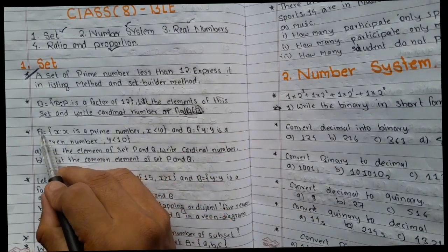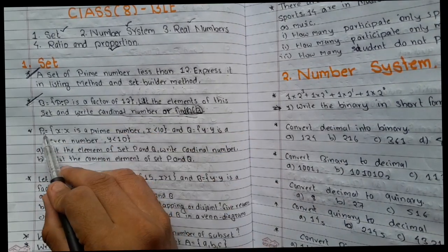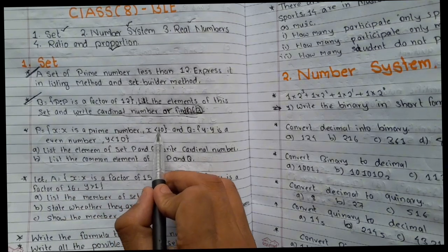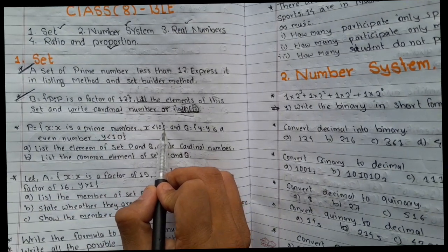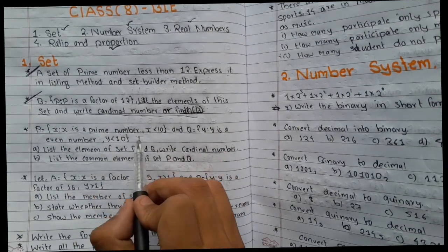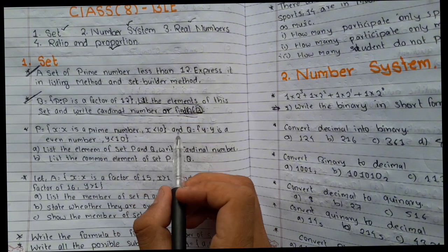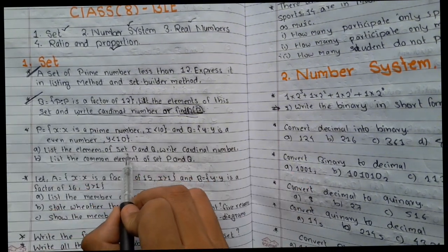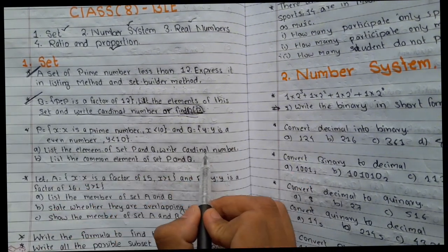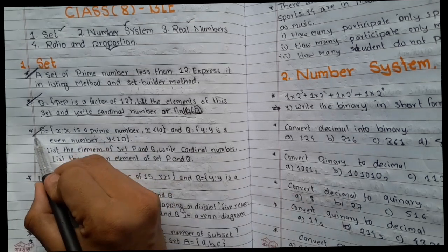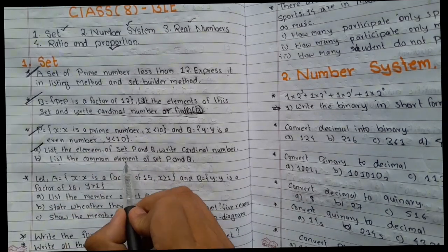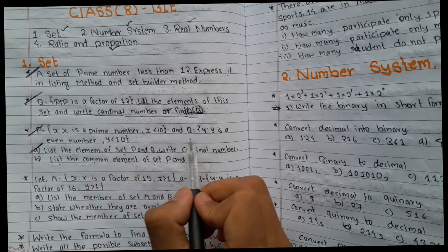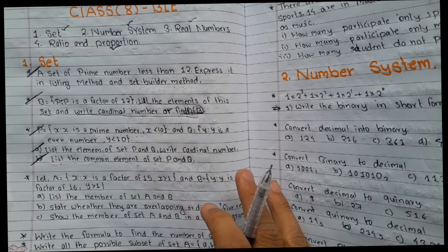This is a very important question. P is equal to x such that x is a prime number less than 10. And Q such that y is an even number less than 10. List the elements of P and Q and write the cardinal number. This is a fixed question. List the common elements of set P and Q — P intersection Q is a common element. Fixed question.